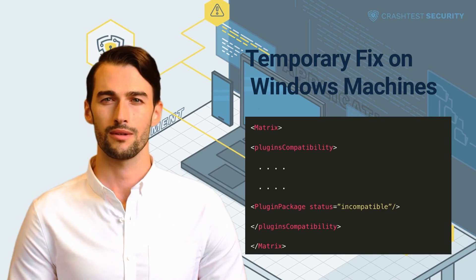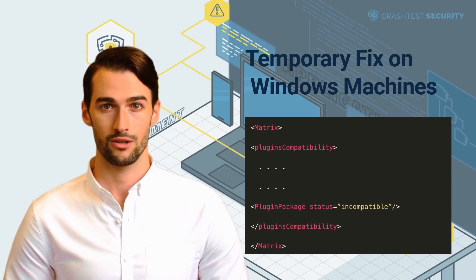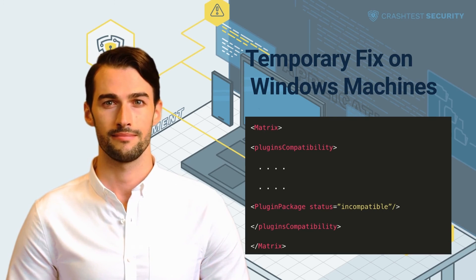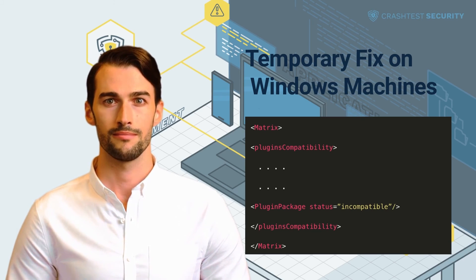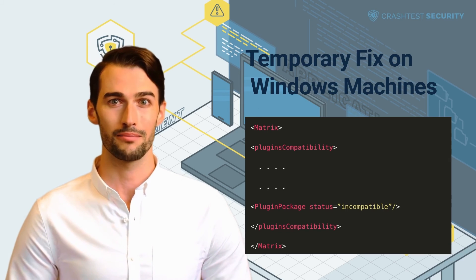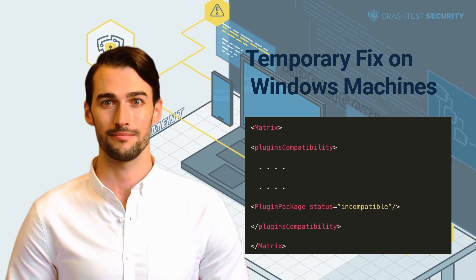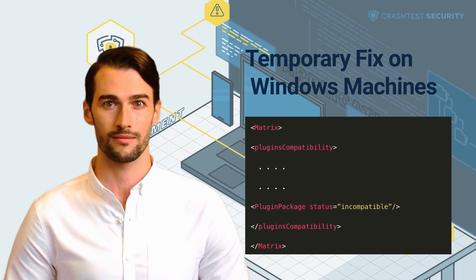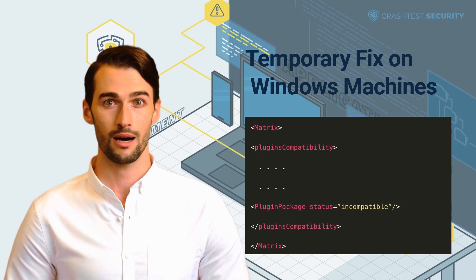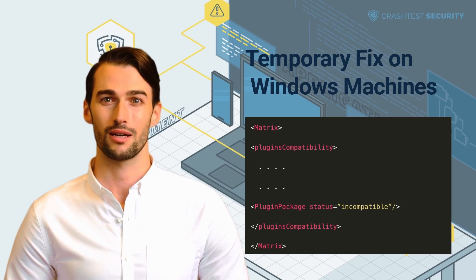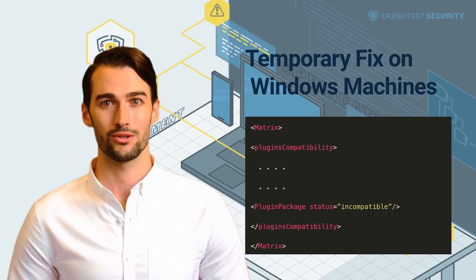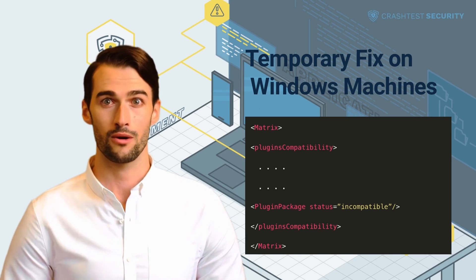Temporary fix on Windows machines. For Windows-based vCenter Server deployments, perform the following steps. 1. Connect to the vCenter Server using the Remote Desktop Protocol. 2. Create a backup of the compatibility matrix file. 3. Add the code shown in the video to the compatibility matrix file. 4. Stop and restart the vsphere-ui service. This makes vCenter incompatible with the vROps client plugin, eliminating the CVE-2021-21972 vulnerability.